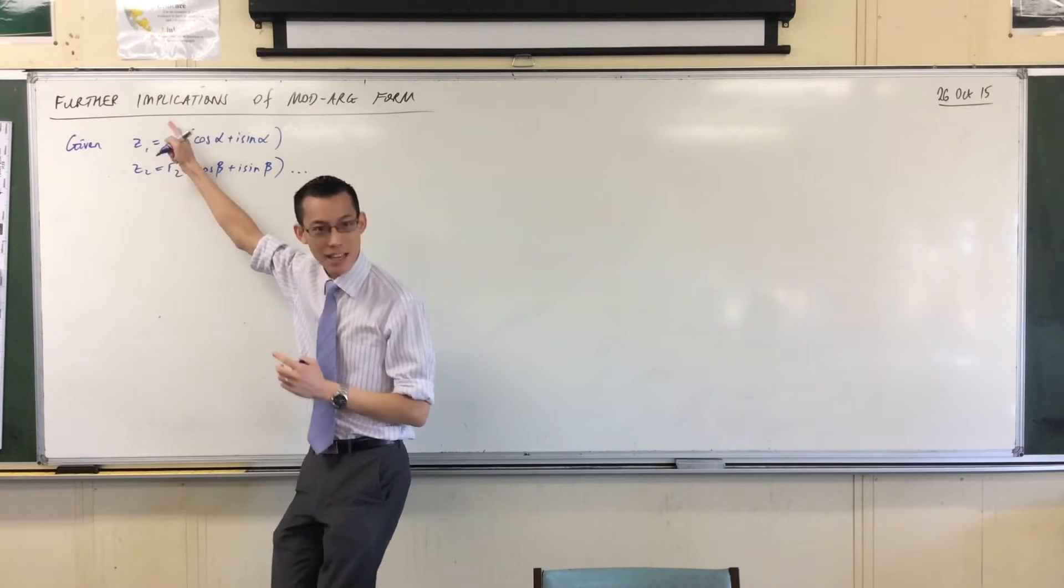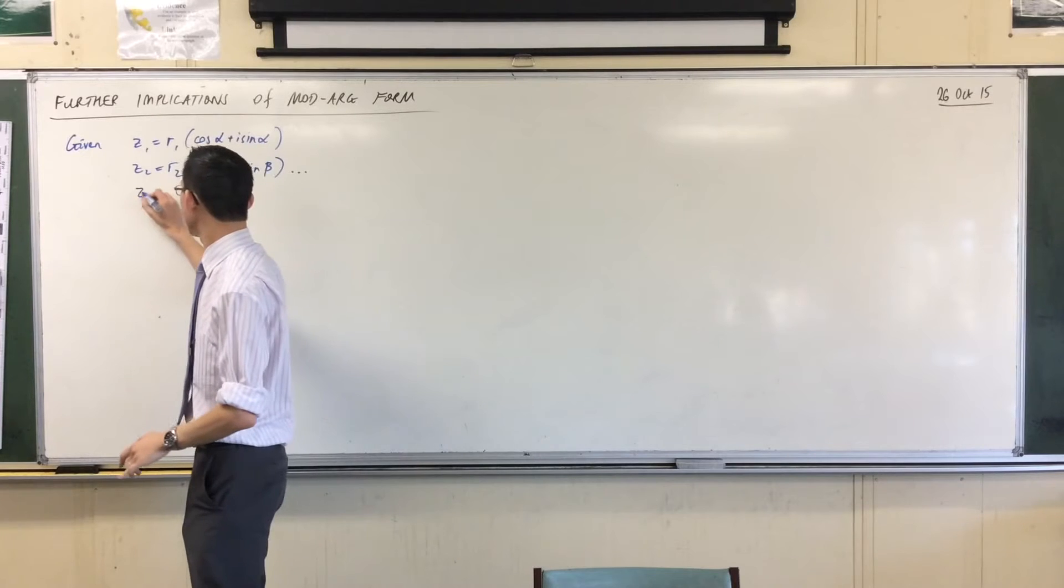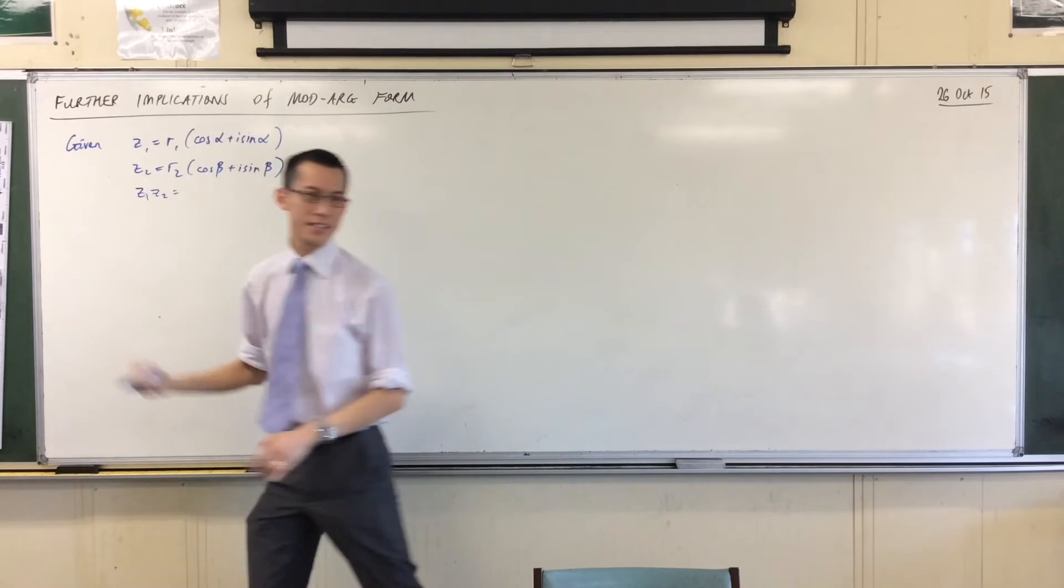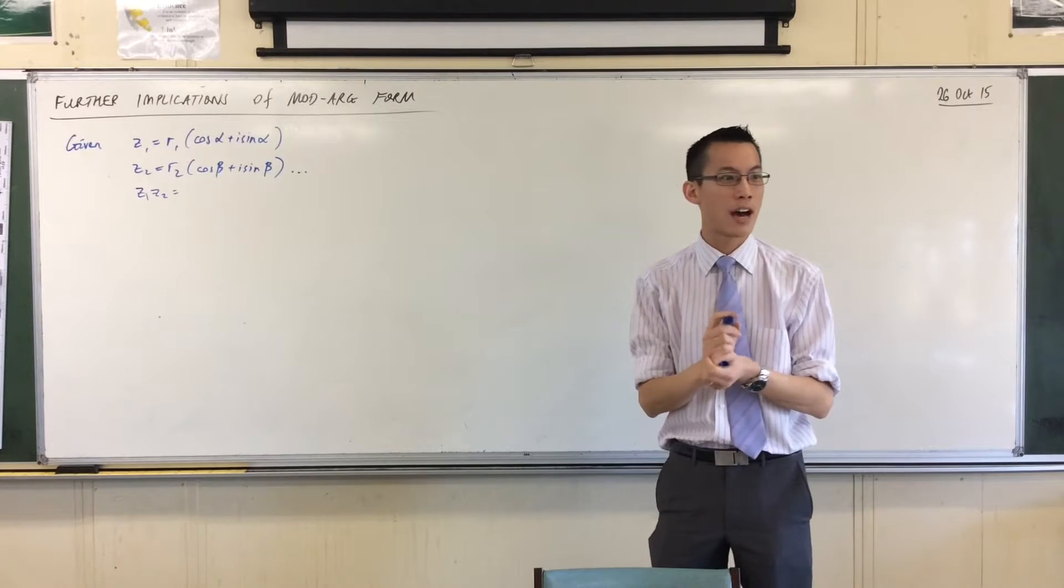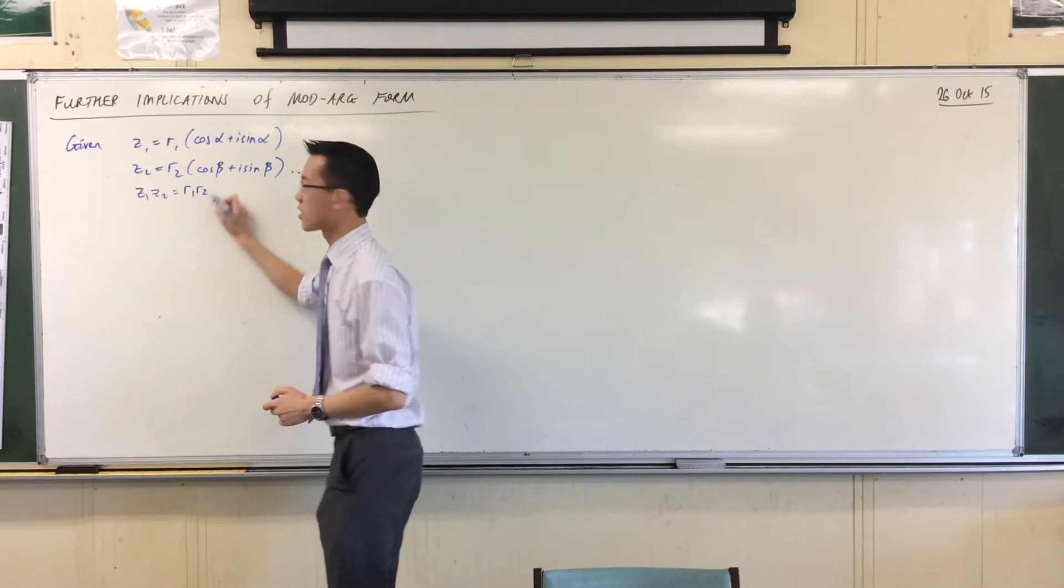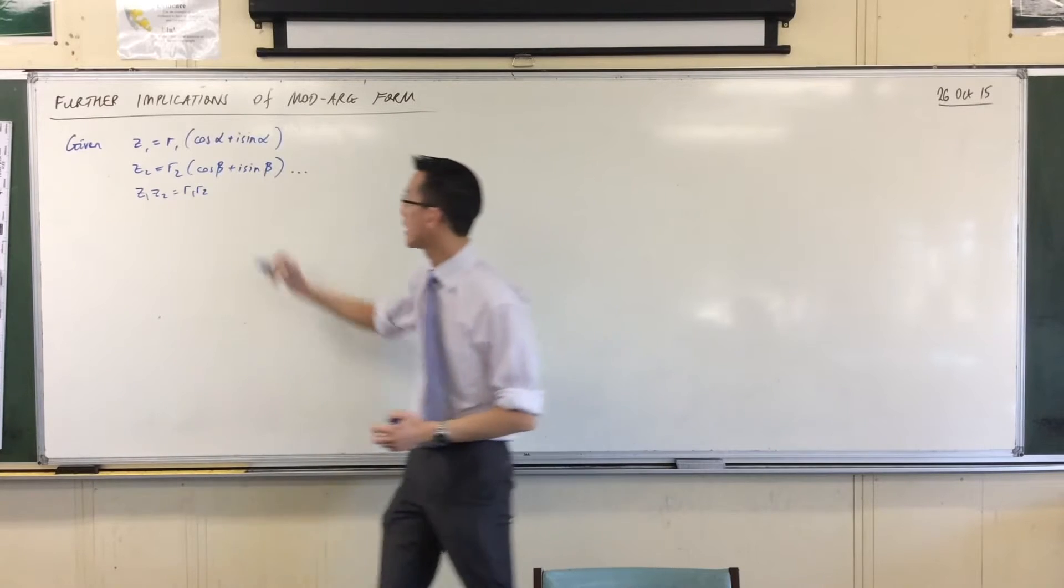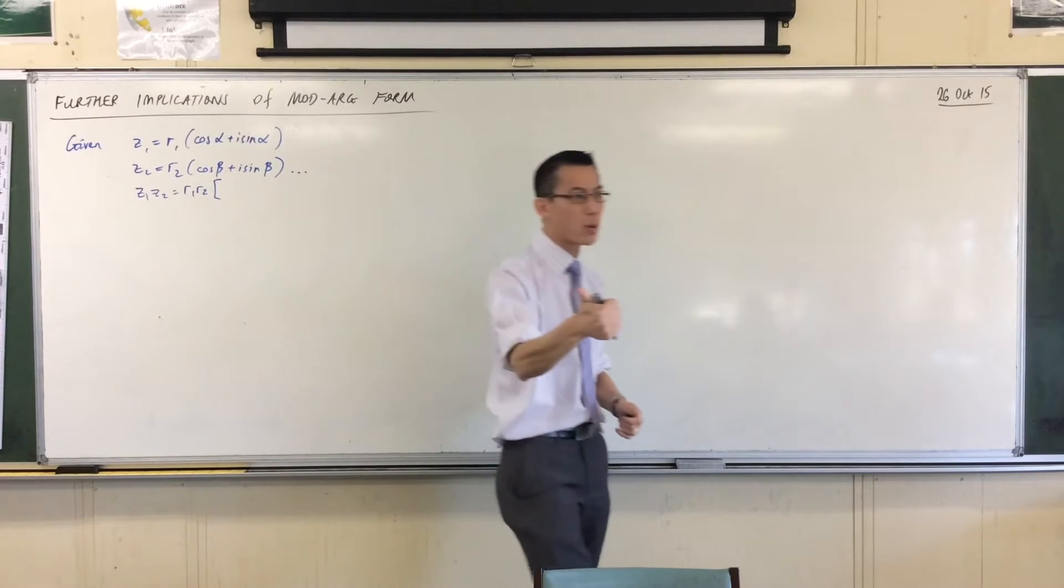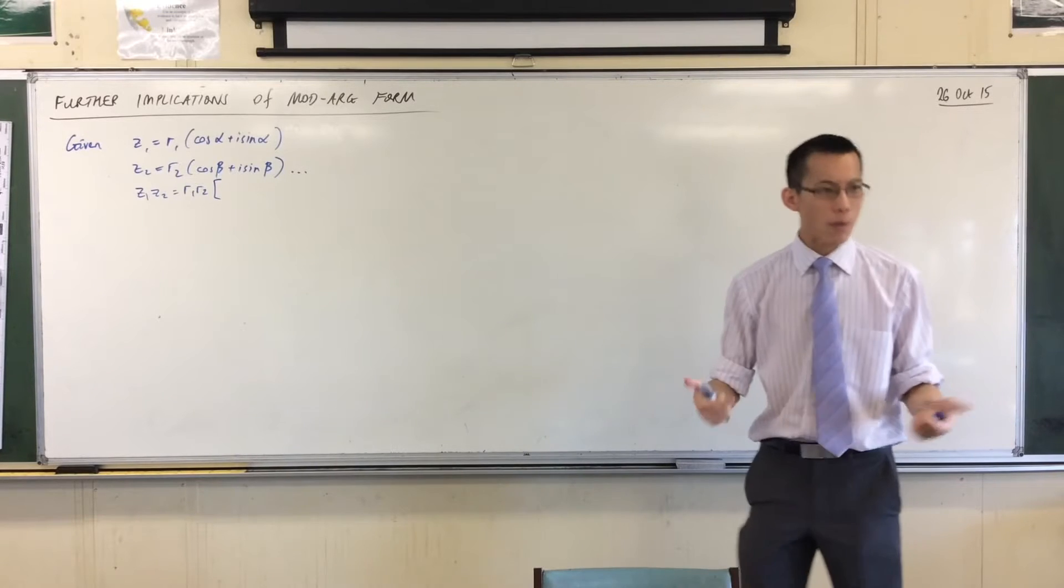In mod arg form, if this is z1, this is z2, let's rehearse the product of z1 and z2. What do we do with the moduli? We multiply the mods, so r1*r2 is going to be hanging out there in front. That's the modulus.